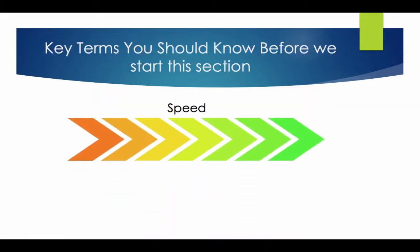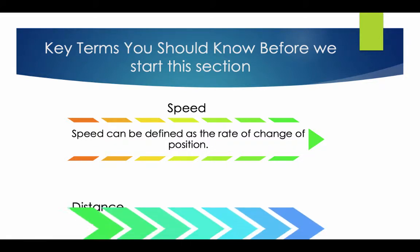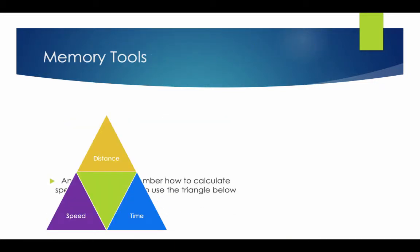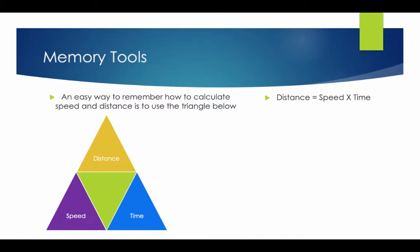Key terms you should know. Speed can be defined as the rate of change of a position. Distance is the length of the path a body follows when moving from one position to another. An easy way to remember how to calculate speed and distance is to use the triangle: distance equals speed times time, and speed equals distance divided by time.